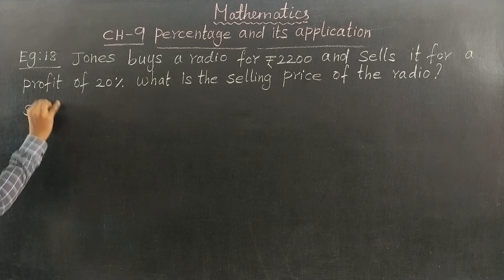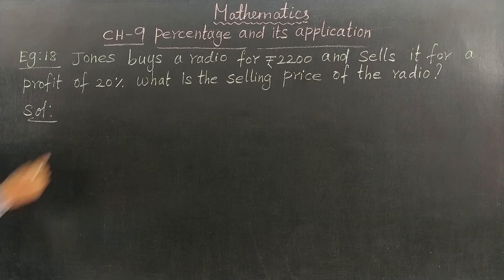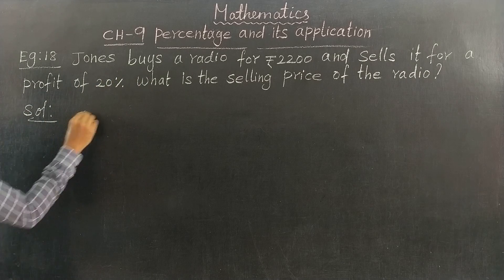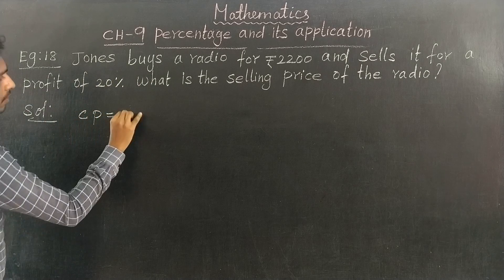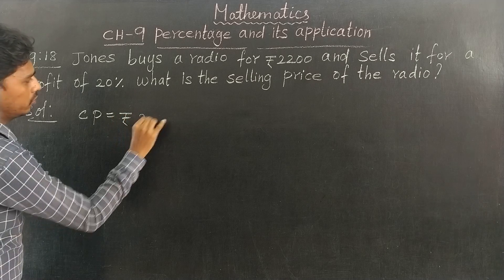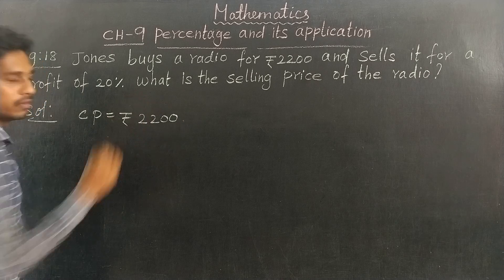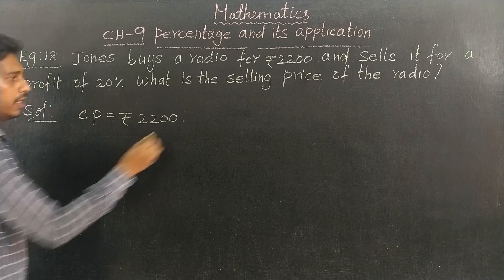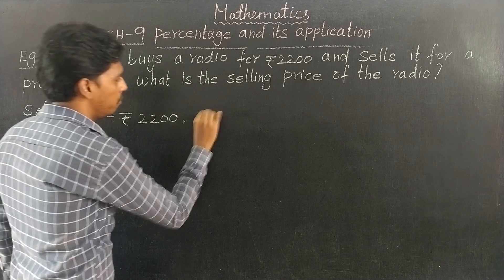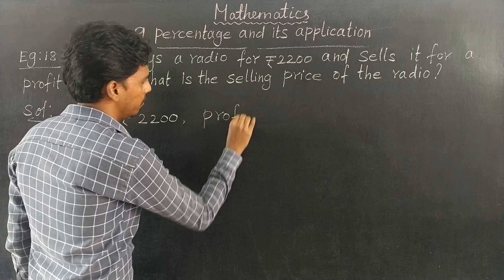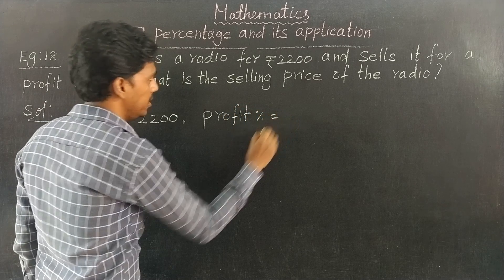Solution. First, cost price: CP equals Rs. 2200. Profit percentage equals 20%.